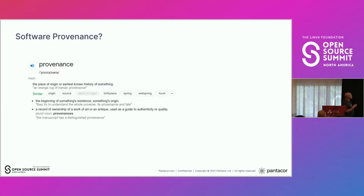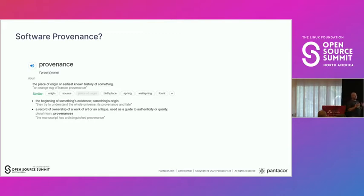So provenance — what is provenance? It's the place of origin of something. Somebody put it very nicely: the chronology of ownership of something. Like, what is the place of origin? Where did it come from? What am I actually looking at? This is very relevant in the world of software, particularly in the world of open source software.